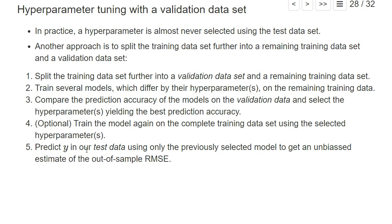Only then do we use our test dataset to assess the out-of-sample root mean squared error of our model using the hyperparameter selected via the validation dataset. The important thing is that we now only assess prediction accuracy on the test dataset for a single model. So we don't have the problem of being over-optimistic from picking the best model using the test dataset. Now our root mean squared error on the test dataset is an unbiased estimate of the true out-of-sample root mean squared error.